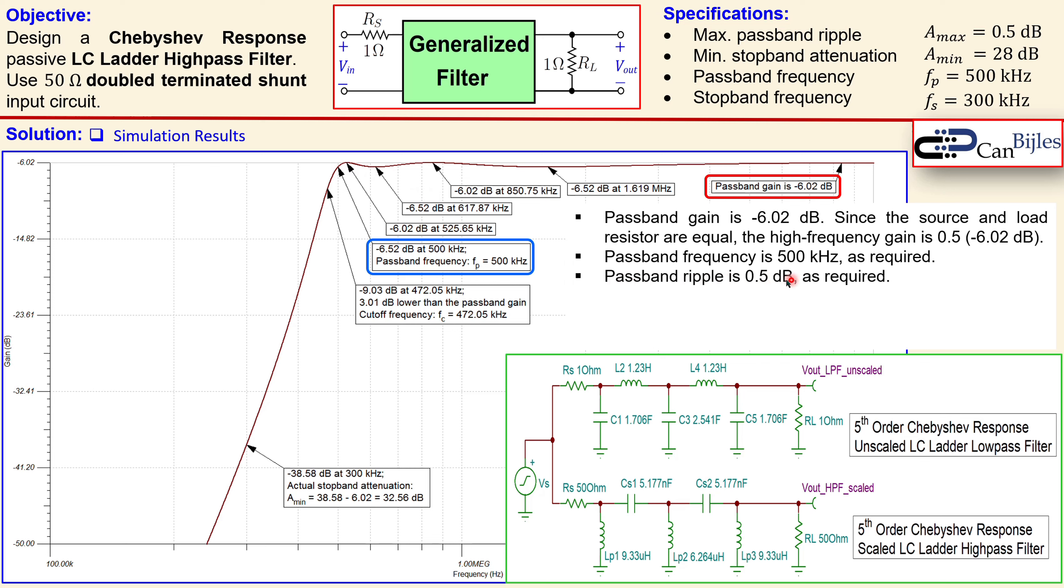The passband ripple is 0.5 dB as required. Now stopband attenuation minimum required was 28 dB, but what we have at 300 kilohertz, the gain is minus 38.58 dB, but we started at minus 6.02 dB, that means we go down by 32.56 dB. We needed 28 dB minimum, so we have now 32.56, that's also achieved.